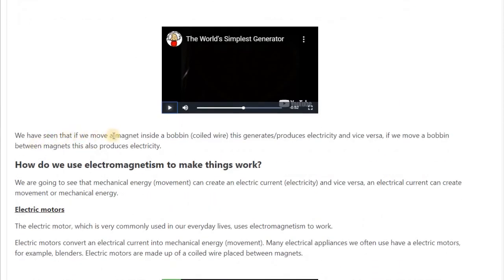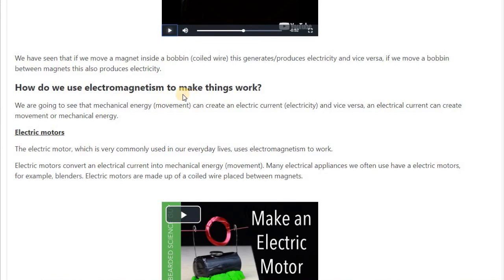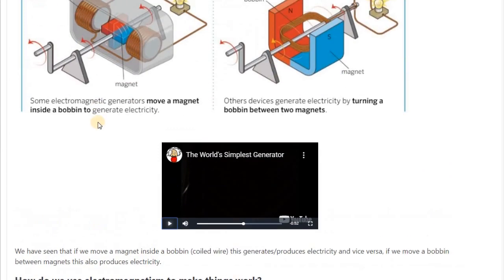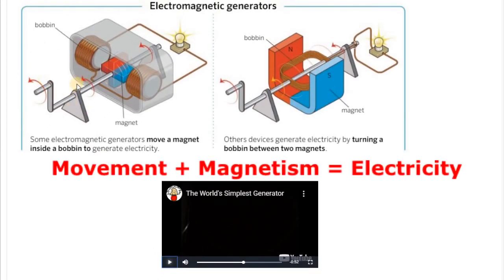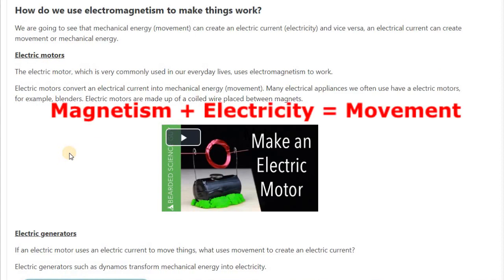So we've seen that if we move a magnet inside a bobbin, this generates or produces electricity and vice versa. But how do we use electromagnetism to make things work? The electric generator is clear. It's this. What are we doing exactly? We're using movement plus magnetism to produce electricity. Moving a magnet or moving a bobbin which is between two magnets, we produce electricity. So remember, movement plus magnetism produces electricity. But in electric motors, what we really have is magnetism and electricity, and we use that to produce movement.